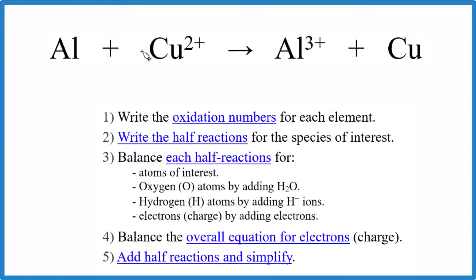Let's balance the redox reaction for Al plus Cu²⁺ gives us Al³⁺ plus Cu. So when we look at the redox reaction here, I've not written the states in just to simplify things. We have these general rules for balancing redox reactions.